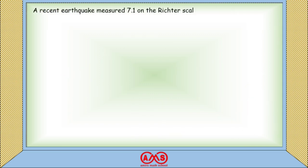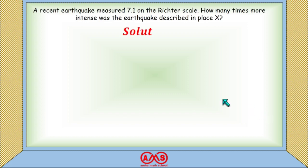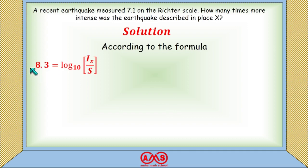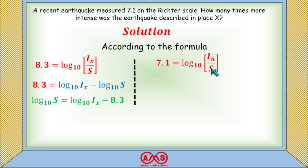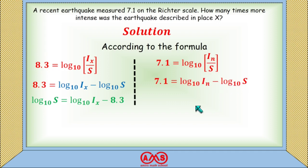A recent earthquake measures 7.1 on the Richter scale. How many times more intense was the earthquake at place X (magnitude 8.3) than this recent one? From the previous case, 8.3 = log₁₀(I_X / S), which gives log₁₀(S) = log₁₀(I_X) − 8.3. For the recent earthquake, 7.1 = log₁₀(I_N / S), so log₁₀(S) = log₁₀(I_N) − 7.1.